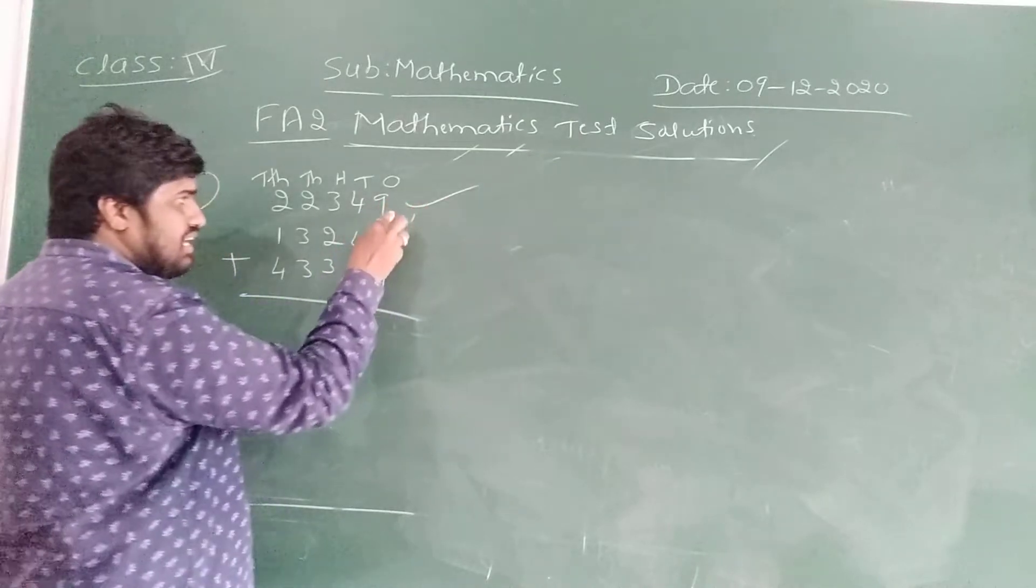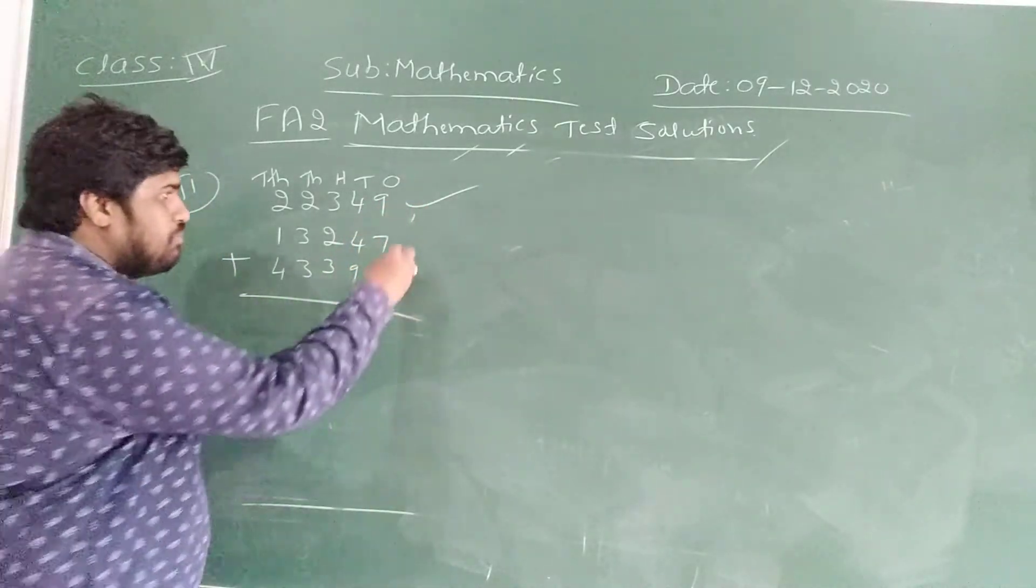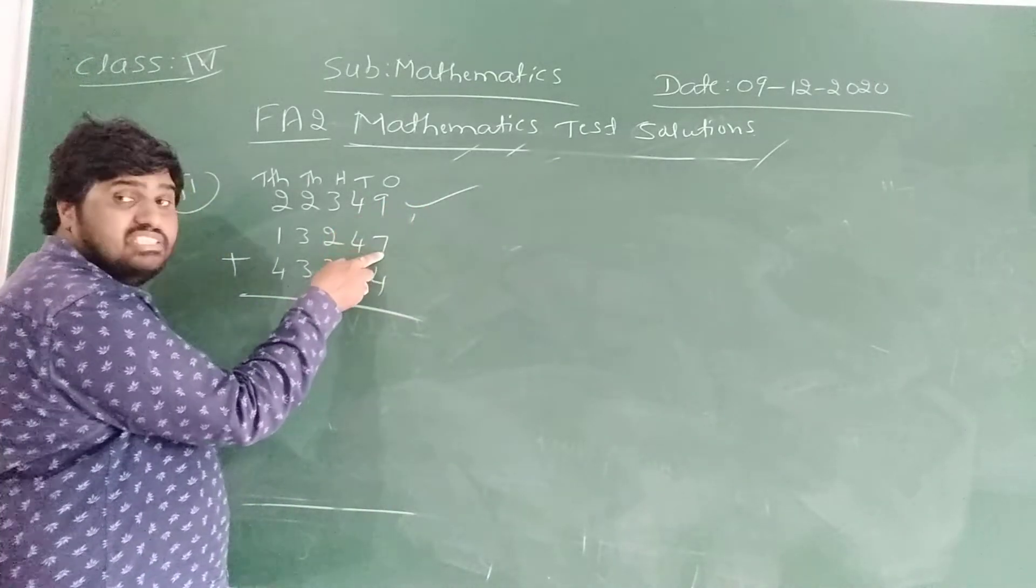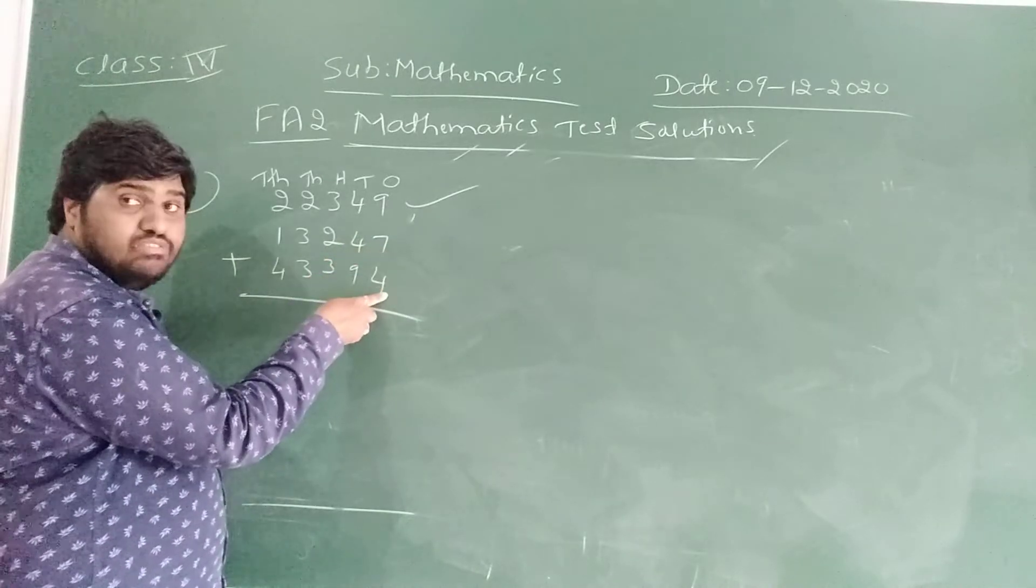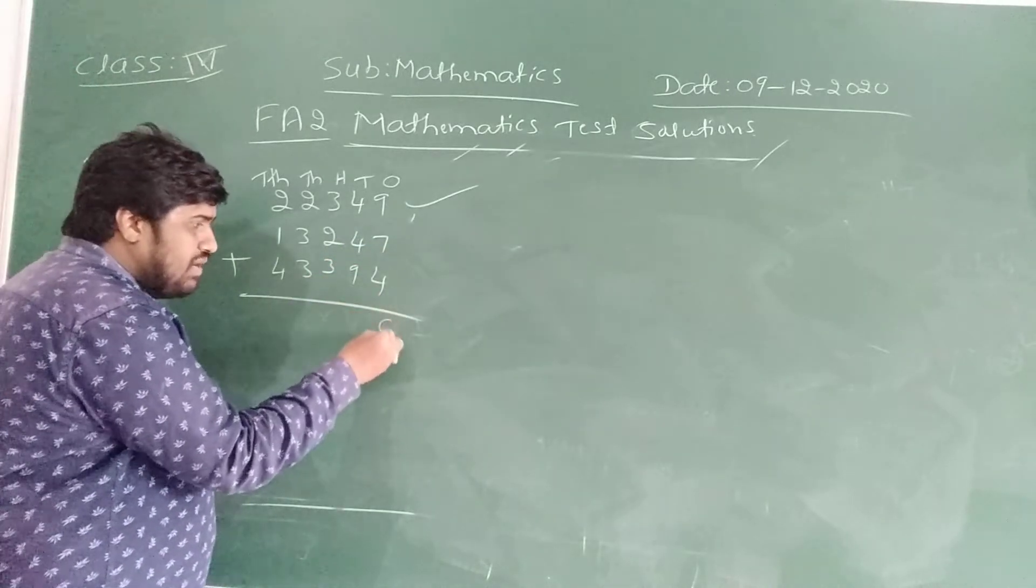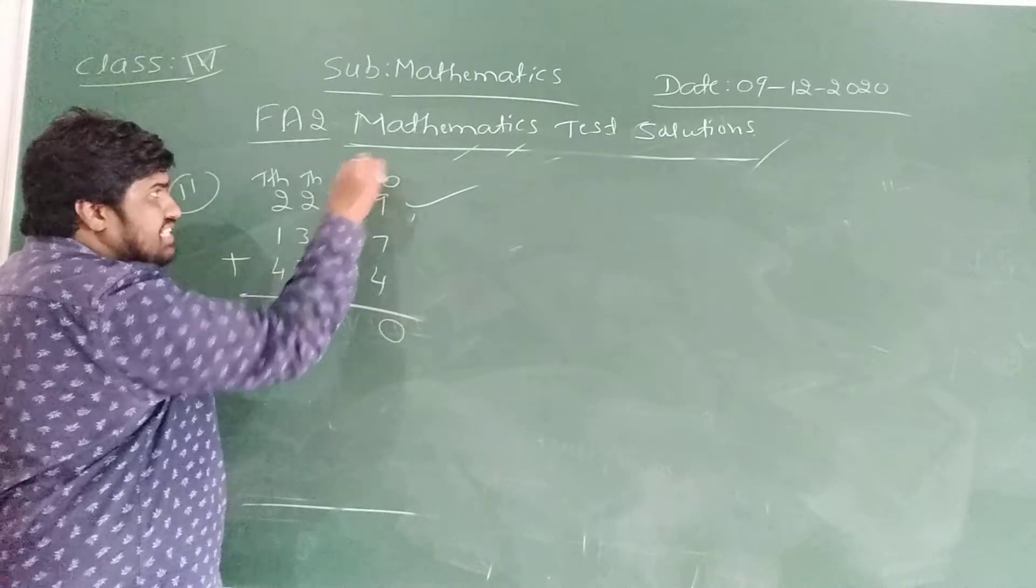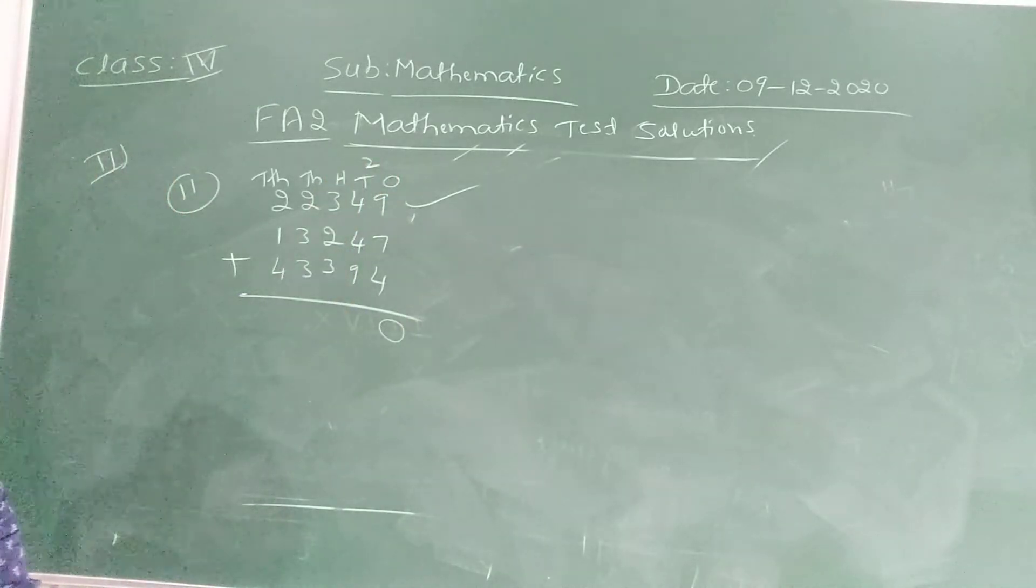Now I am going to add the ones. 9 plus 7, 9 plus 7 is how much? 9 plus 7 is 16. 16 plus 4, 20. For 20, write 0, 2 as the carry. Okay.